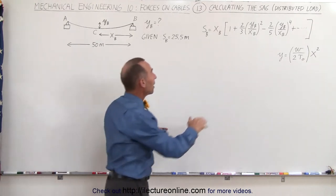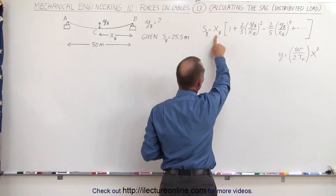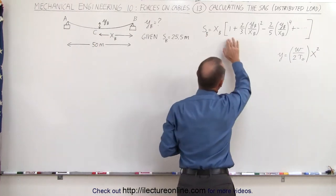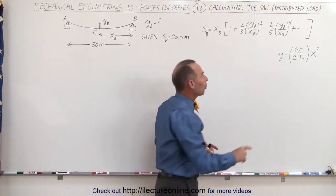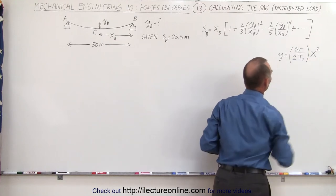We use the same expansion equation. We know that the length of the cable is equal to the horizontal distance of the cable from C to B, times this infinite expansion. And that, of course, comes from the equation where we know that the shape of the cable is parabolic using this equation right here.